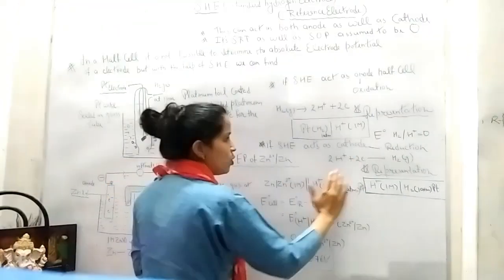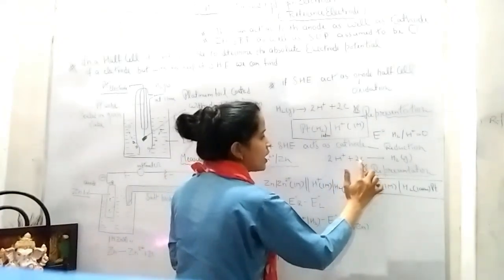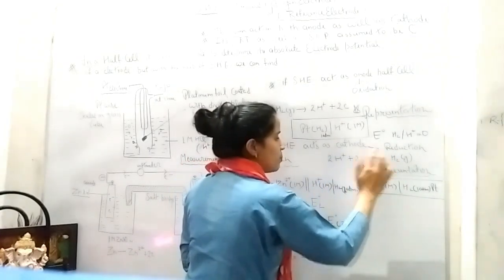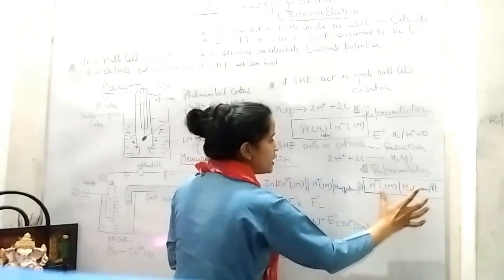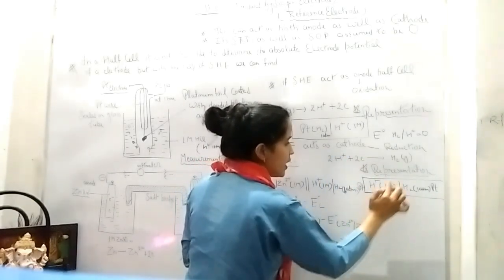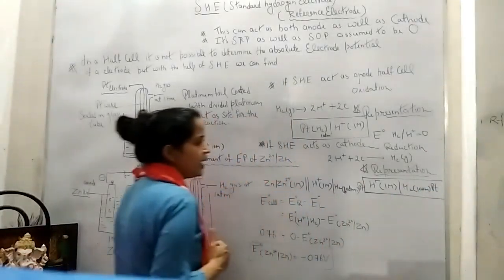If SHE acts as a cathode, reduction occurs. It means 2H+ gains two electrons to become H₂. Observe here plus one and here is zero, means reduction is occurring.